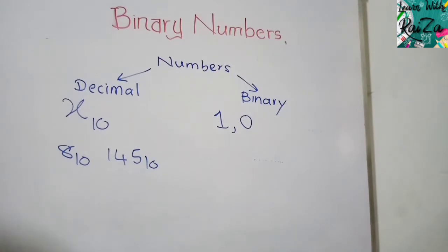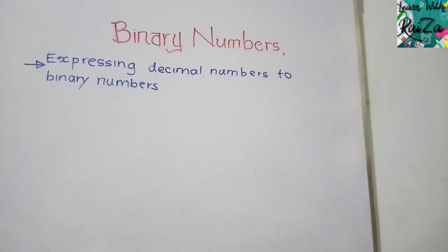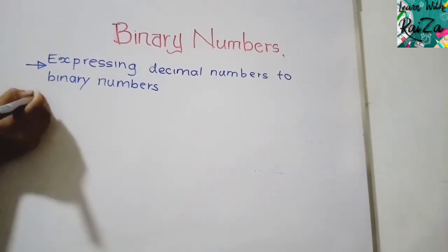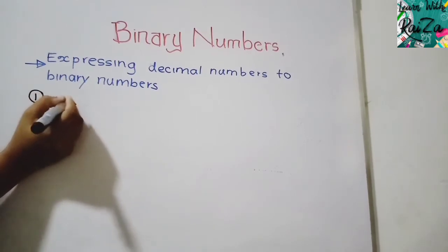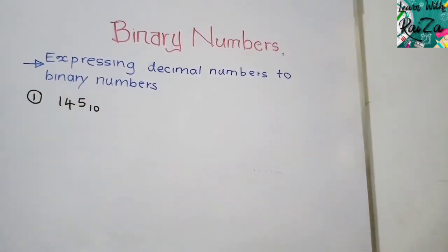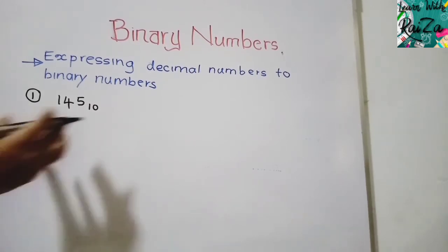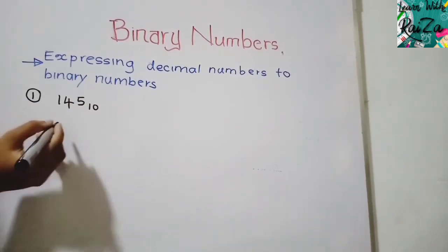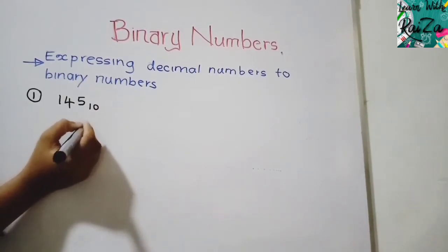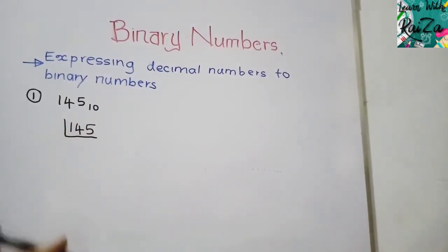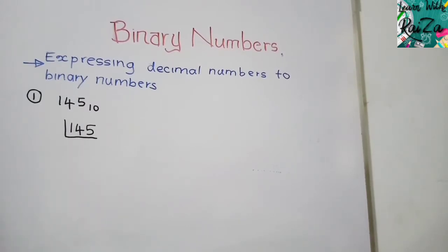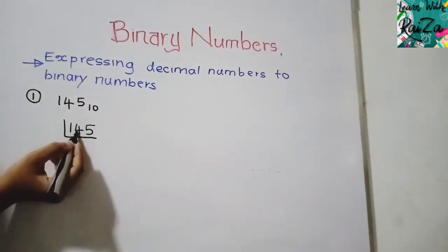Now I'll teach you how to express decimal numbers in binary form. Let's take 145 to the base 10 as our first example. When expressing any decimal number in binary form, the rule is to divide the number continuously by 2 until we can no longer divide — that is, until we reach 1. So let's begin dividing 145 by 2.